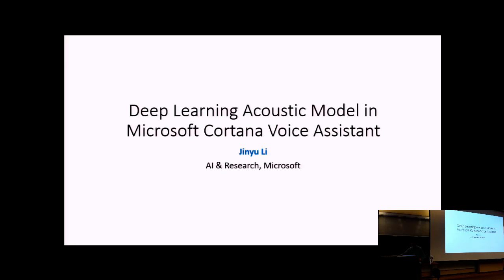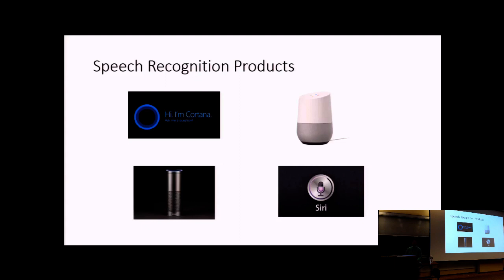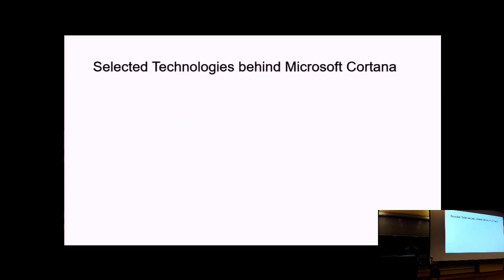The Johns Hopkins speech group is one of the best, and I'm really honored to be invited here to share my experience in the deep learning acoustic model behind the Microsoft Cortana Voice Assistant. These days, all the big companies have their own speech recognition products: Microsoft has Cortana, Google has Google Home and Voice Assistant, Amazon has Echo, and Apple has Siri. All these products are now powered by deep learning technologies developed in the last five years.